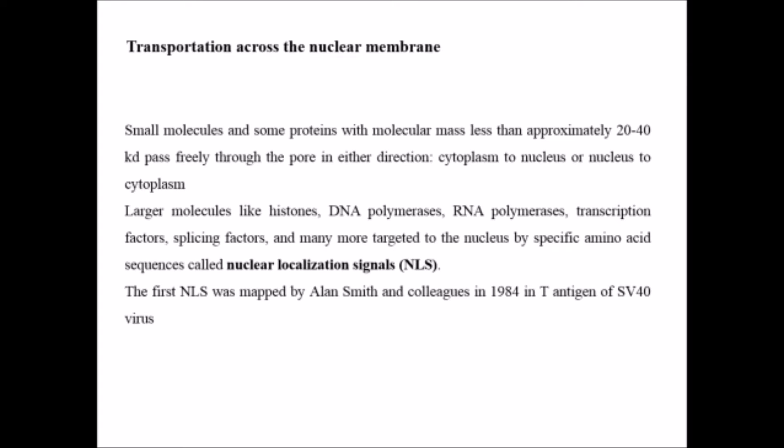Now, transportation across the nuclear membrane: small molecules can easily pass, but large molecules — including histones, DNA polymerases, RNA polymerases, and more — have certain very specific sequences. These are known as nuclear localization signals, or NLS. The name itself suggests that it localizes the protein towards the nucleus. This was first mapped by Alan Smith and colleagues in 1984, in the T antigen of simian virus SV40.